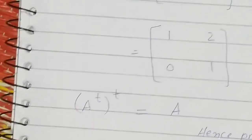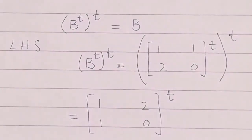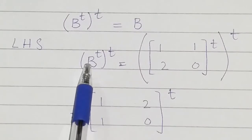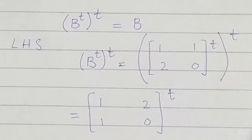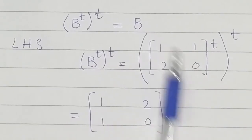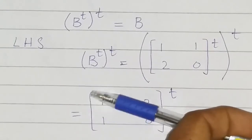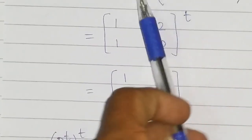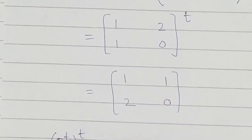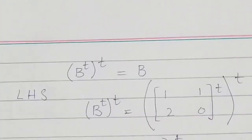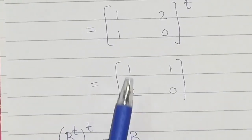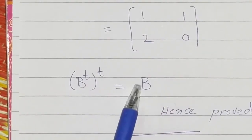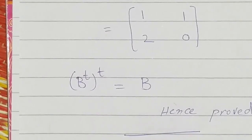Similarly for B transpose transpose: we write B and take its transpose by making the first column the first row and the second column the second row. Then taking the transpose again — first column becomes first row, second column becomes second row — it becomes B again. This was B = [1, 2; 1, 0], and here again we get [1, 2; 1, 0]. So B transpose transpose equals B, which is what we wanted to prove.